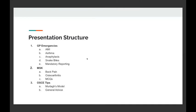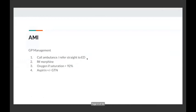Moving on to emergencies. The first one is AMI. The very simple management for AMI: step one is always call the ambulance and refer to ED if a heart attack type presentation presents to the general practitioner. When an exam question is based on this — you know, central crushing chest pain, radiating to the left arm, nausea, sweating — the first thing to do: it's tempting to pick IV morphine, oxygen, aspirin, or GTN. But the first answer should always be call an ambulance and refer to ED.